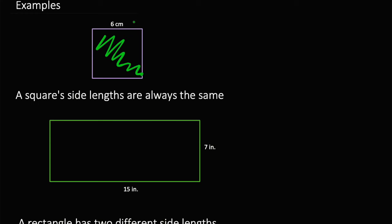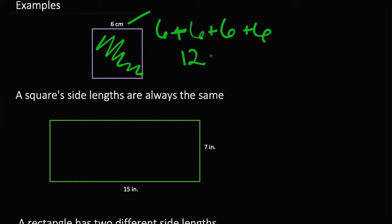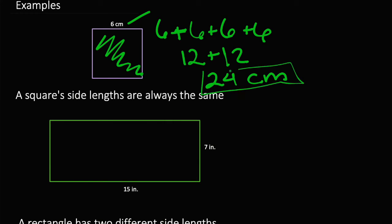So since we know that one side length is 6, we also know that there are 1, 2, 3, 4 side lengths. That means we have to do 6 plus 6 plus 6 plus 6, since there are 4 side lengths that are 6 centimeters long. 6 plus 6 is 12, and 6 plus 6 is again 12, and 12 plus 12 is 24. So we know that our perimeter is 24 centimeters — that's how we find the perimeter of the square.